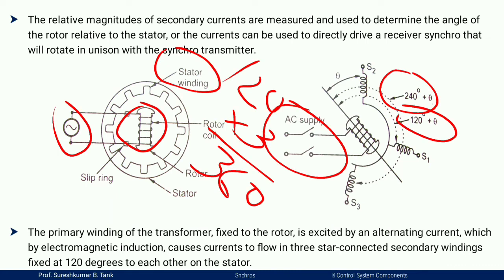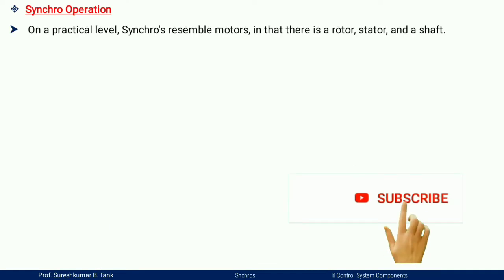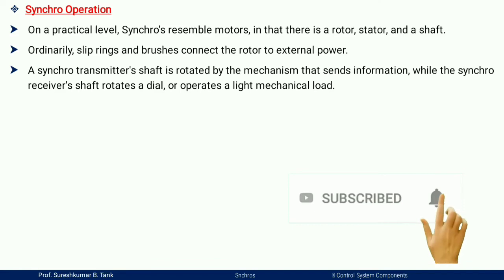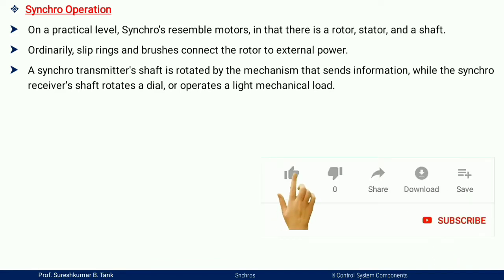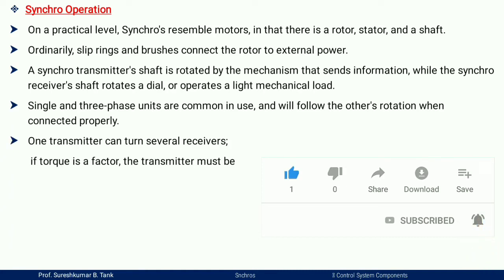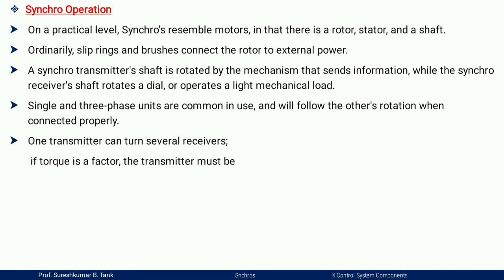Synchro operation has three main parts: rotor, stator, and shaft. The shaft is the rotating part, and the rotor is also a rotating part. The shaft connects to the rotor, which connects to the stator through different types of synchro transmitter and synchro receiver connections.